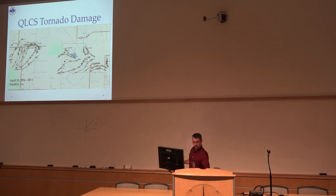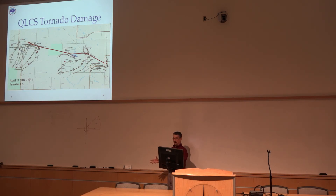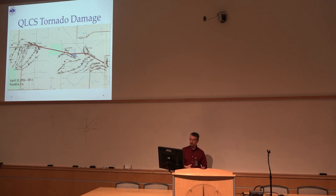You can see a confluent pattern right there — there's convergence, and it's a narrow enough convergence. The damage was significant: it was a decent EF1 tornado. We could pick out damage that looked like tornado damage underneath the couplet, underneath the little hook. So we do know that at times those are real tornadoes.